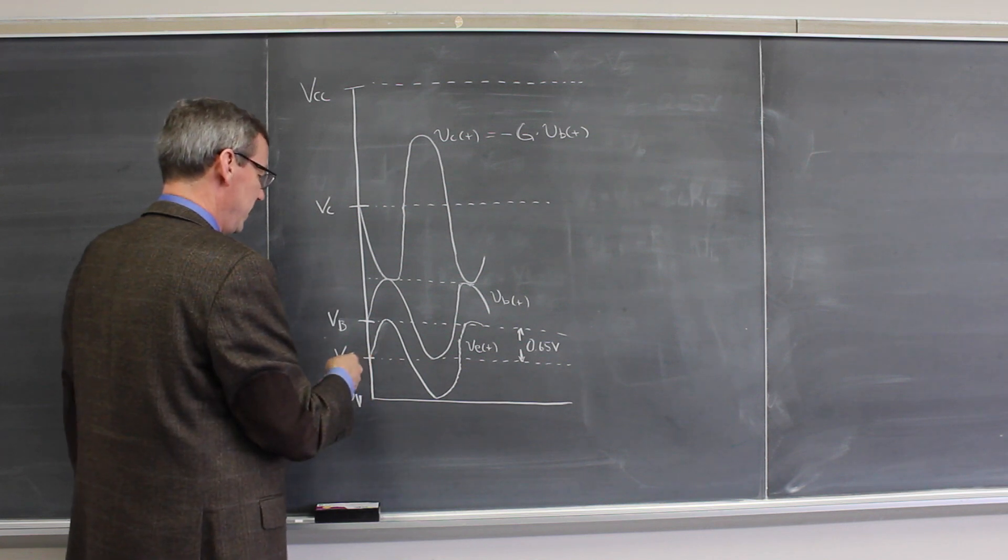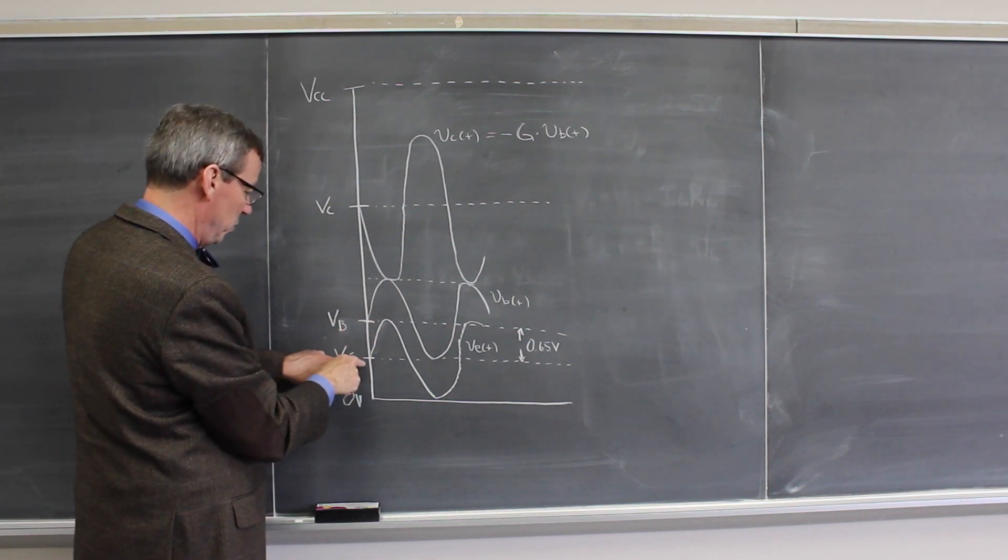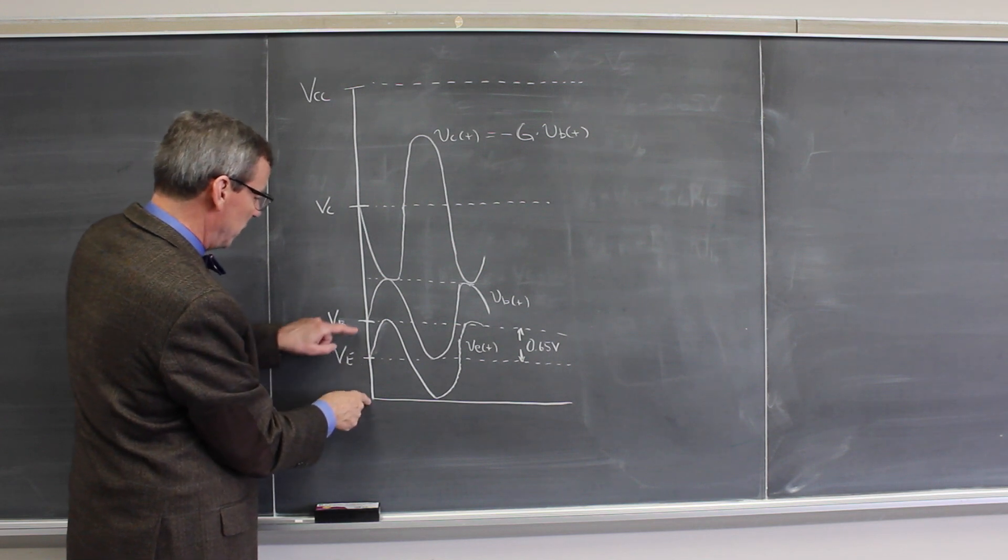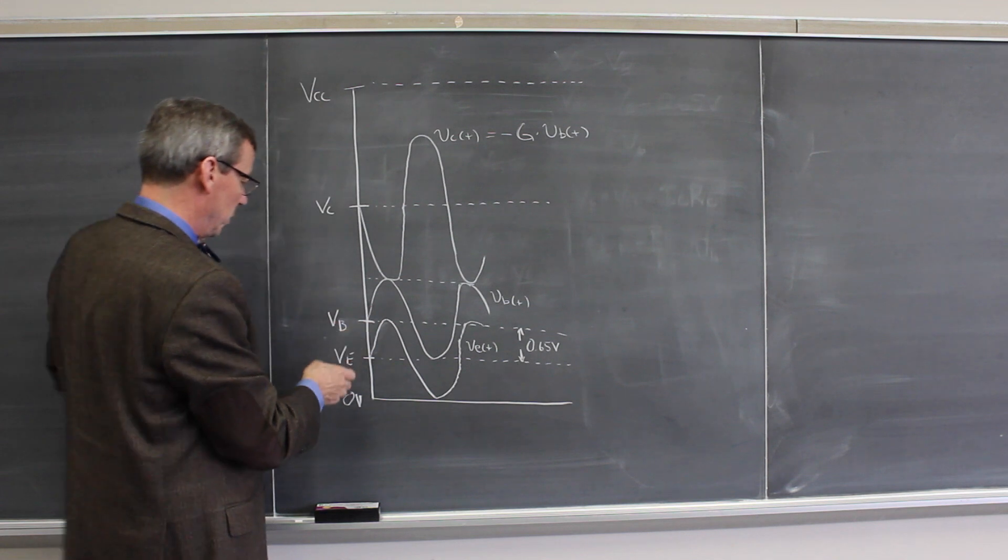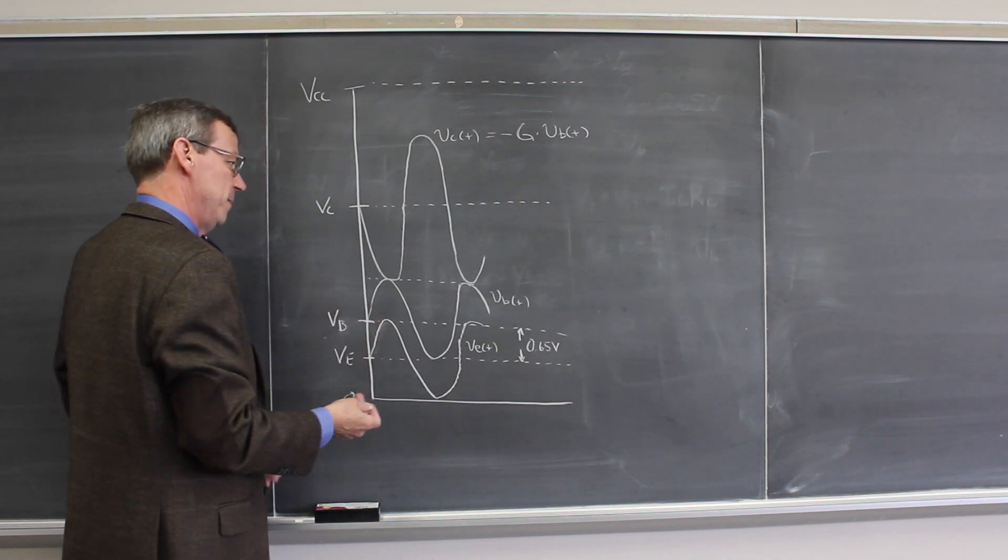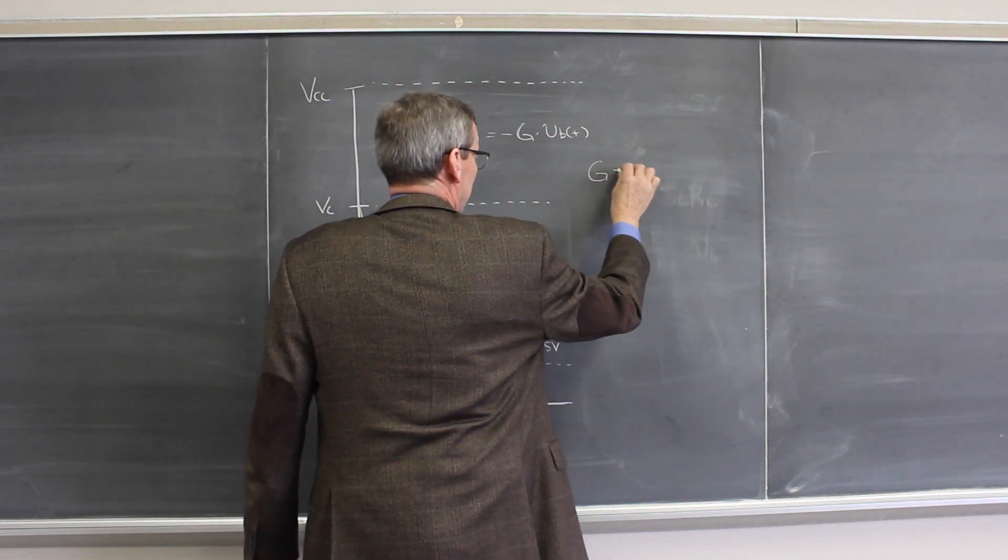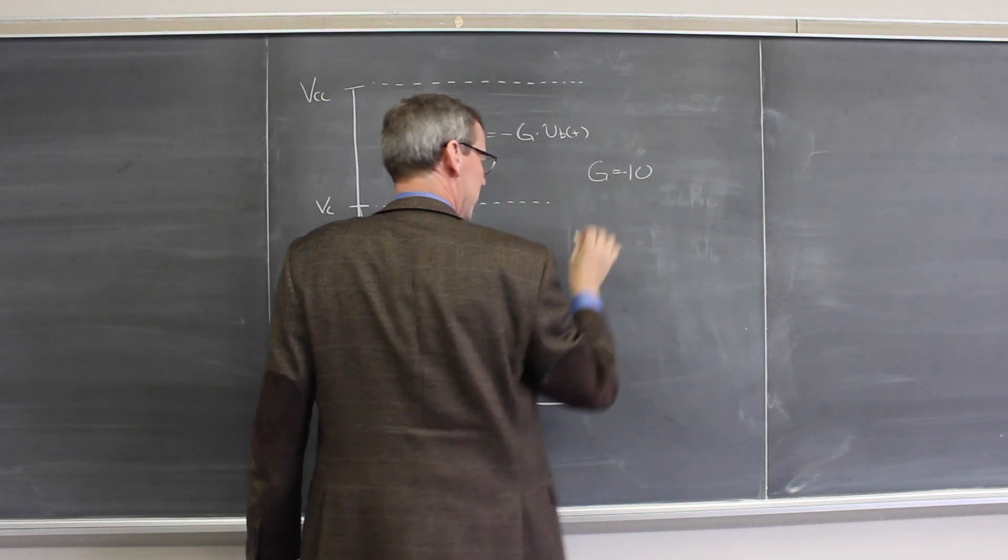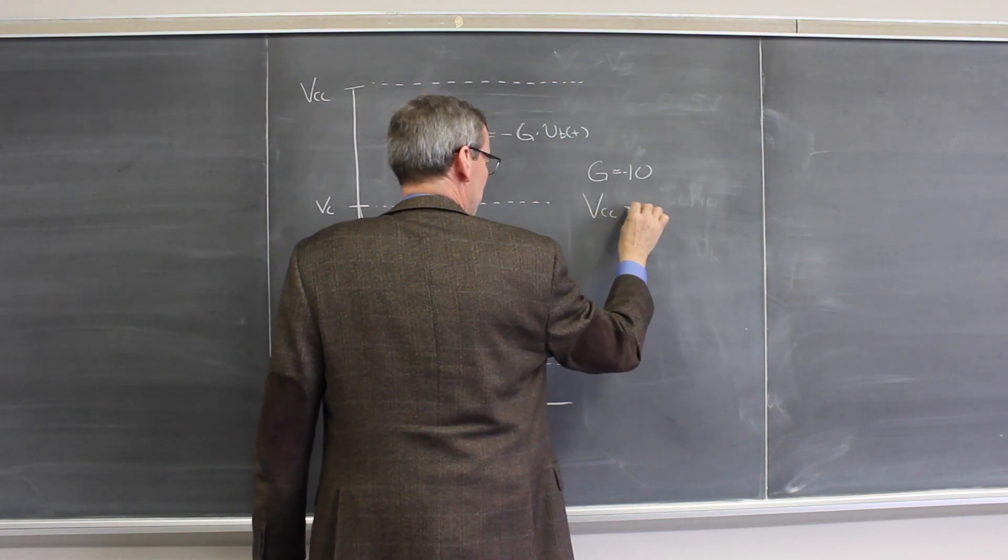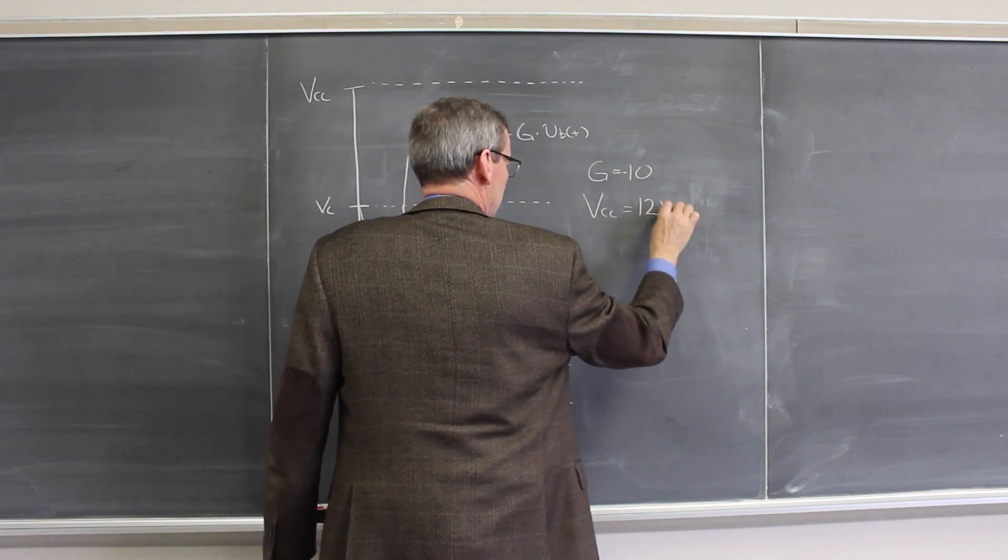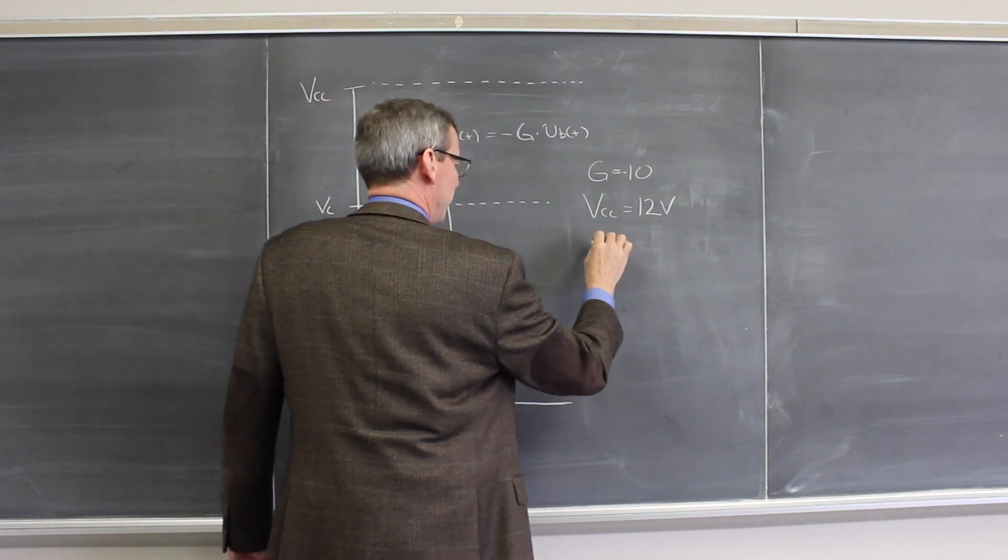If the gain were a factor of 10, then you would want to push the base voltage down as close to zero as you could get it to leave the most space here. So now you need to actually set some voltage levels. But if we chose a gain equal to minus 10, Vcc let's just say 12 volts, and we want to amplify a 0.5 volt, half a volt input signal...